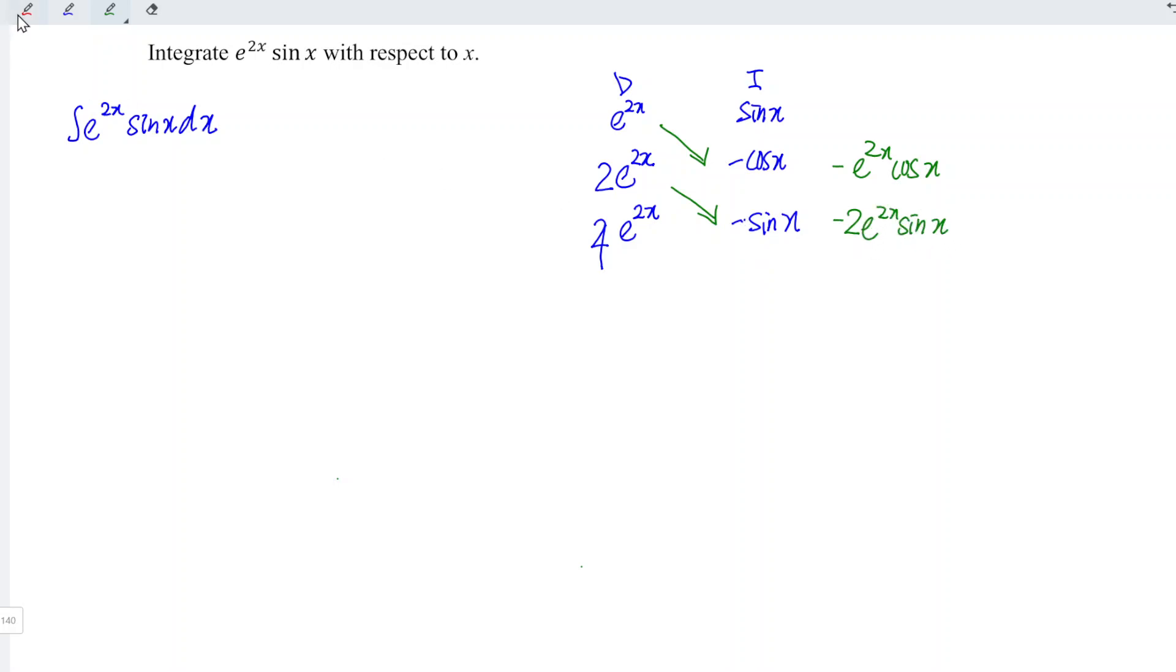And don't forget that under the DI method, the signs should be alternately plus minus plus, which means that plus times negative gives negative, negative times negative gives positive. And we can now write this is equal to minus e to the power of 2x cos x plus 2e to the power of 2x sin x.